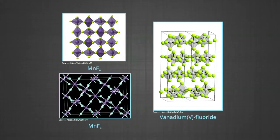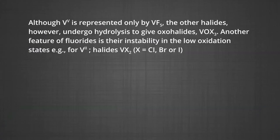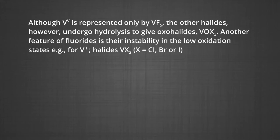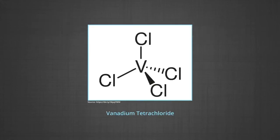The figure shows the halides of manganese and vanadium. Manganese fluoride has manganese in light purple and fluorine in yellow-green. Although vanadium in the +5 oxidation state is represented only by VF5, the other halides undergo hydrolysis to give oxo halides like VOX3. Another feature is the instability in low oxidation states — for example, vanadium halides VX2 where X can be Cl, Br, or I.